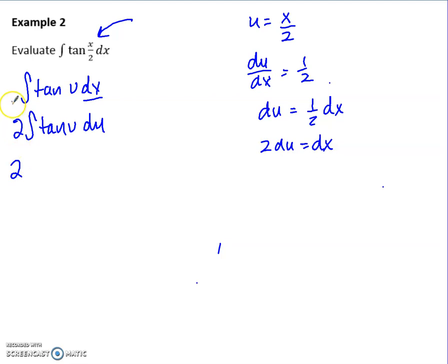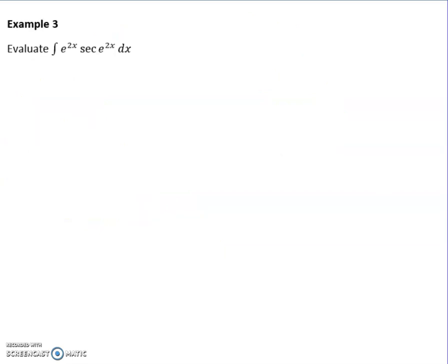Then you just have to remember that your integral for tan becomes a negative ln cos u. So we end up with negative 2 ln cos of x over 2. Don't forget those absolute values. And of course, plus c.